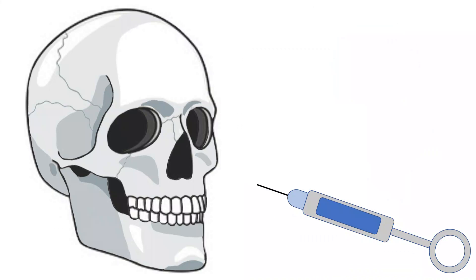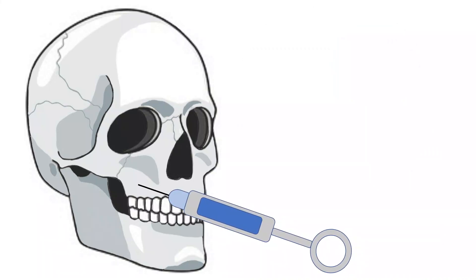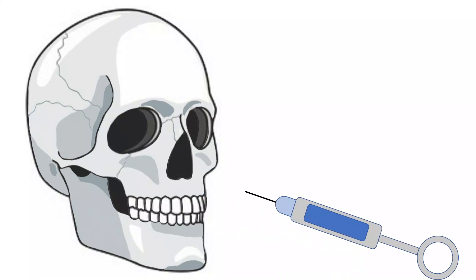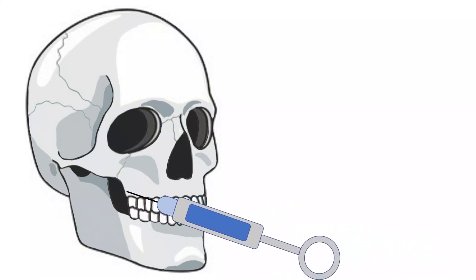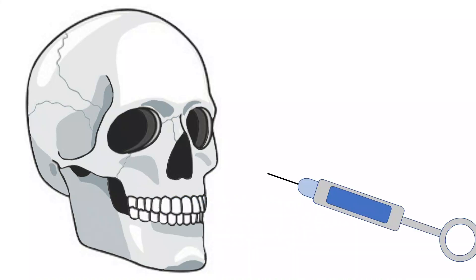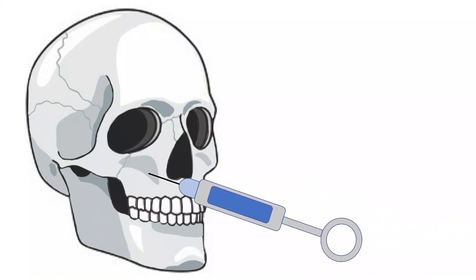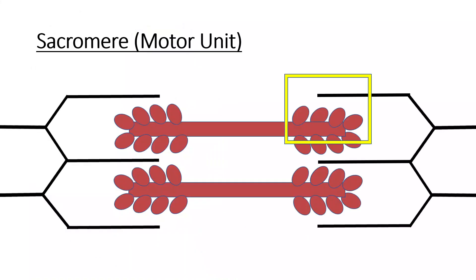Trismus can occur due to muscle trauma from multiple needle insertions during local anesthetic delivery. Muscle trauma can lead to the same motor unit being repeatedly stimulated in quick succession, causing a fused muscle contraction, known as tetanus or trismus when it occurs in the jaw.